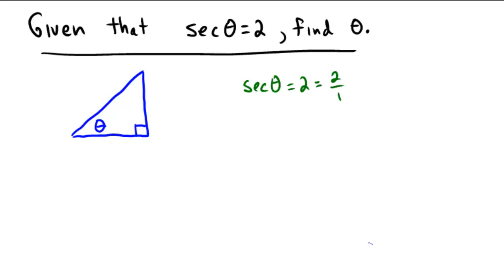Well, notice that 2 is the same as 2 over 1, and secant is the ratio of the hypotenuse to the adjacent side in a right triangle. So in our reference triangle over here in blue, we know that its hypotenuse would be 2 and its adjacent side would be 1.